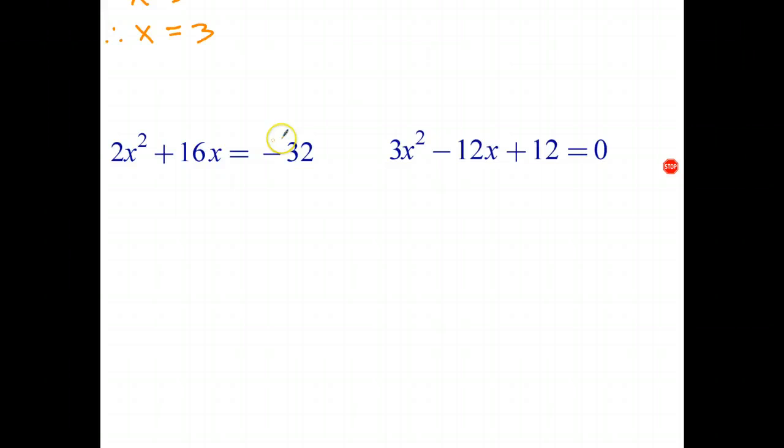So there's the quadratic equation. Now the first thing you might note is we don't have a 0 on the right-hand side. So the first thing we have to do is rewrite the equation. So if I've got a negative 32 on the right, I can turn that into a 0 by adding 32. And my new equation becomes 2x squared plus 16x plus 32 equals 0.